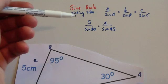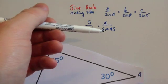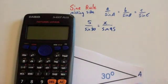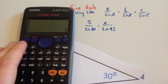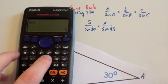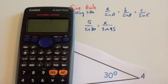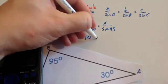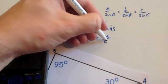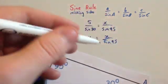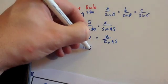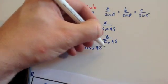To solve that, we do 5 divided by sin 30 and then multiply by sin 95. So 5 divided by sin 30 equals 10, giving us 10 equals x divided by sin 95. Then multiply both sides by sin 95, so 10 sin 95 equals x.